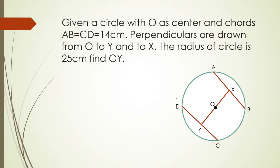Given a circle with O as center and chords AB equal to CD equal to 14 cm. Perpendiculars are drawn from O to Y and O to X. The radius of circle is 25 cm. You have to find the length of OY. We are already given that OX and OY are the perpendiculars, so let's draw the sign. We have to find the length of OY, and we can see that we have two right-angled triangles. So we will use the Pythagorean theorem in triangle OXB and triangle OCY.